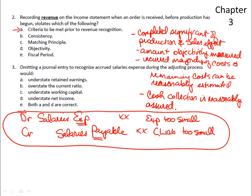If we omit making this entry, then expenses are too small, which means net income will be too large and retained earnings would be overstated. And if we fail to credit salaries payable, our current liabilities would be too small, which means the current ratio would be impacted as well.